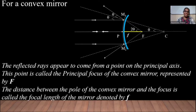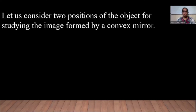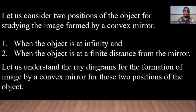Let us now consider two positions of the object for studying the image formed by a convex mirror. The first position is when the object is at infinity, and the second position is when the object is at a finite distance from the mirror. With the help of ray diagrams, we'll understand the formation of image by a convex mirror for both these positions.